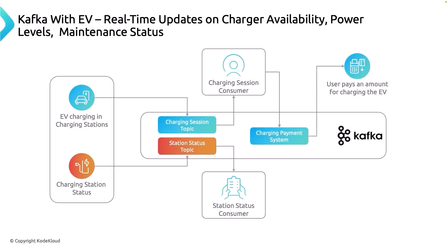The station status report is accessible to users via an app to see which charging stations are free. It can also be used by charging station administrators to monitor the entire station remotely. Kafka is acting as a backbone to hold all these real-time events and ensure they can be consumed and displayed in real time.